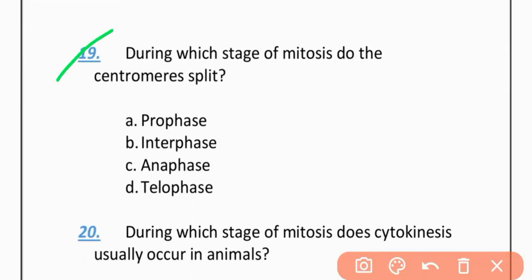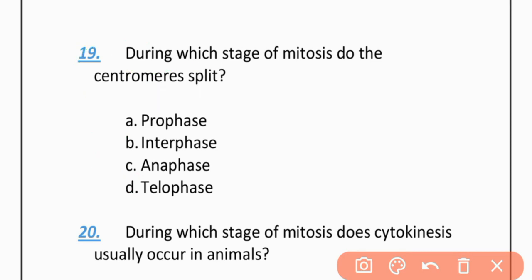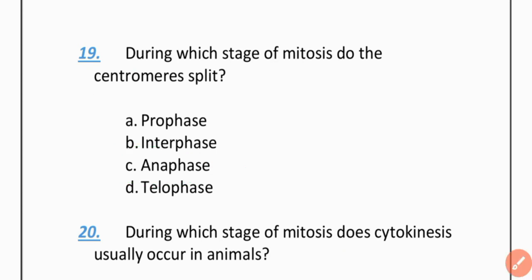MCQ 19: During which stage of mitosis do the centromeres split? Option A: Prophase. Option B: Interphase. Option C: Anaphase. Option D: Telophase. The correct option is C — Anaphase.